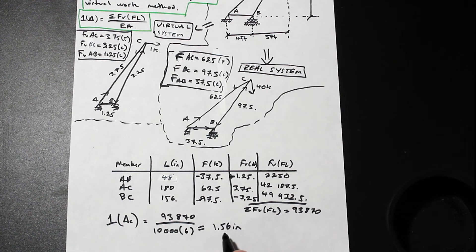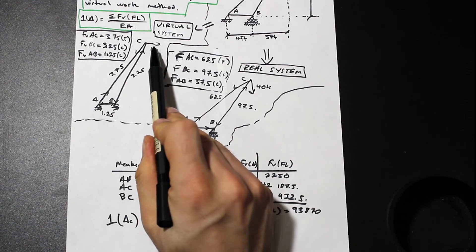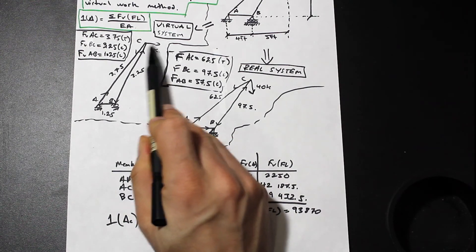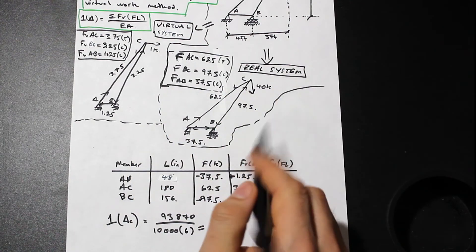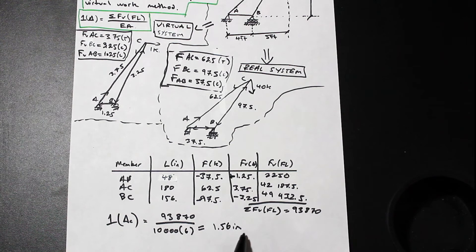And since we got a positive value here, we know that the direction that we assumed for the deflection was correct. If we assumed a different direction for the unit load and we got a negative, for example, then we know that the deflection's in the other direction. But since we have a positive number, we know that our assumption was correct. So that's the deflection at point C, the horizontal deflection.